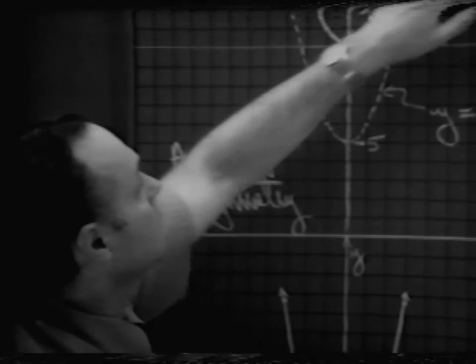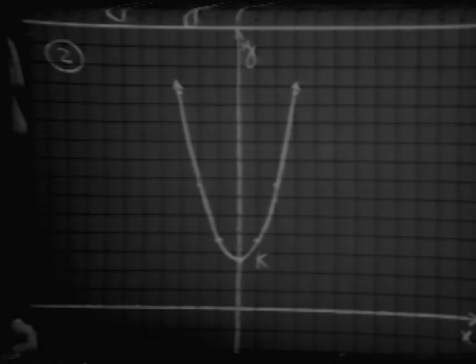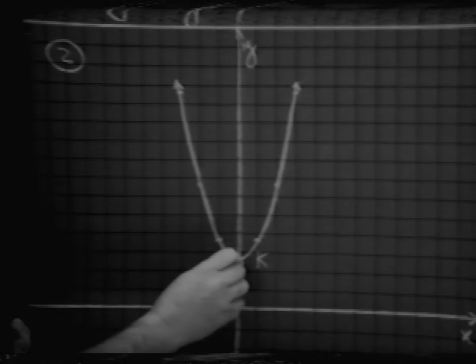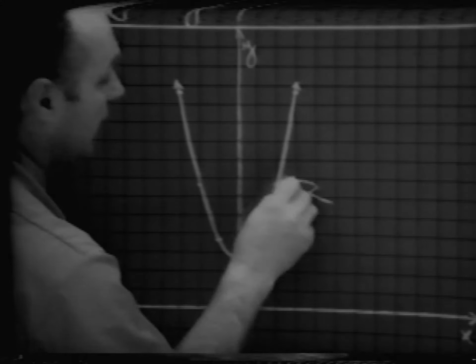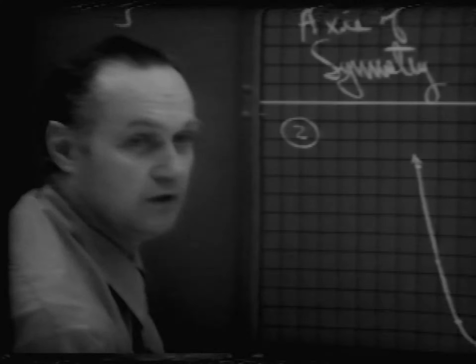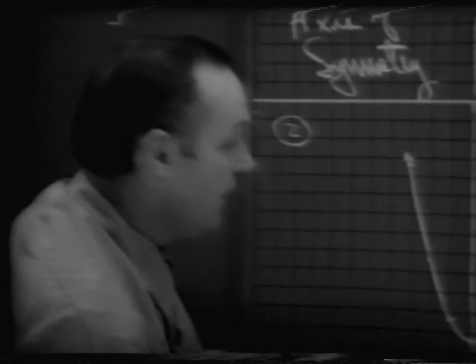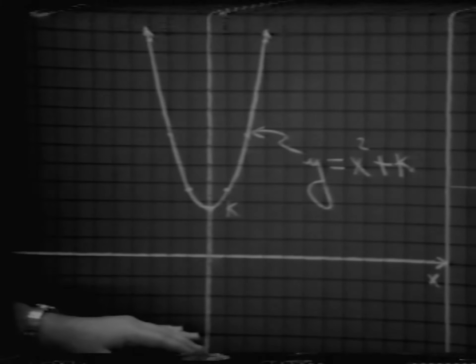Let's try to generalize this idea of adding some number to x squared, to the graph of y equals x squared. Here in example 2 we have a parabola whose axis of symmetry is still the y-axis, and it's going to have a minimum point at y equals k. The equation of this graph is y equals x squared plus k. That number k is going to have the effect of moving the graph in a vertical fashion — up or down. If k is positive it pushes the graph up, and if k is negative it brings it down.